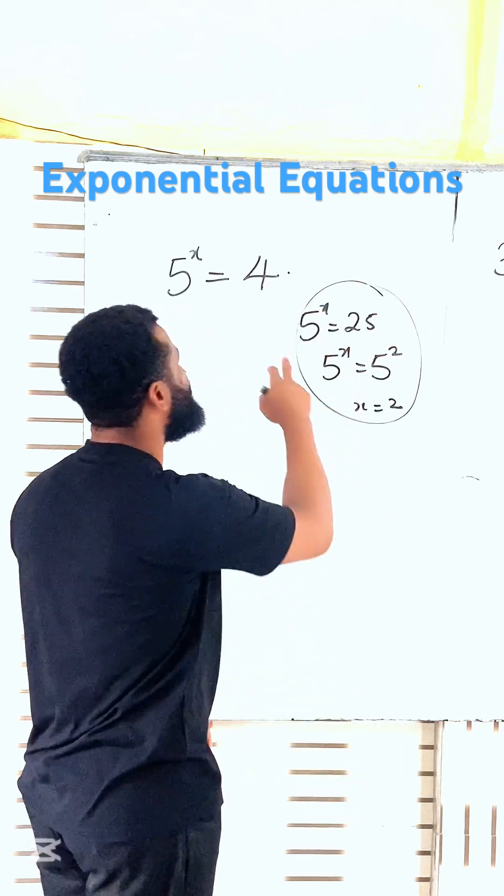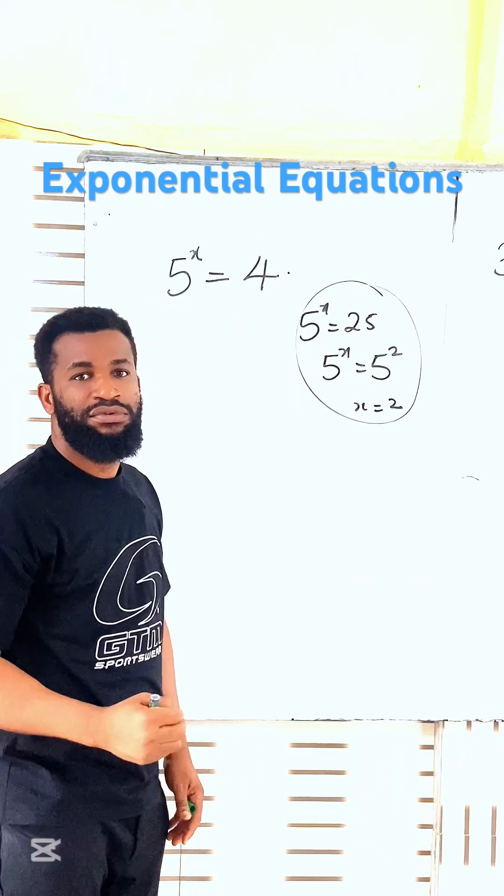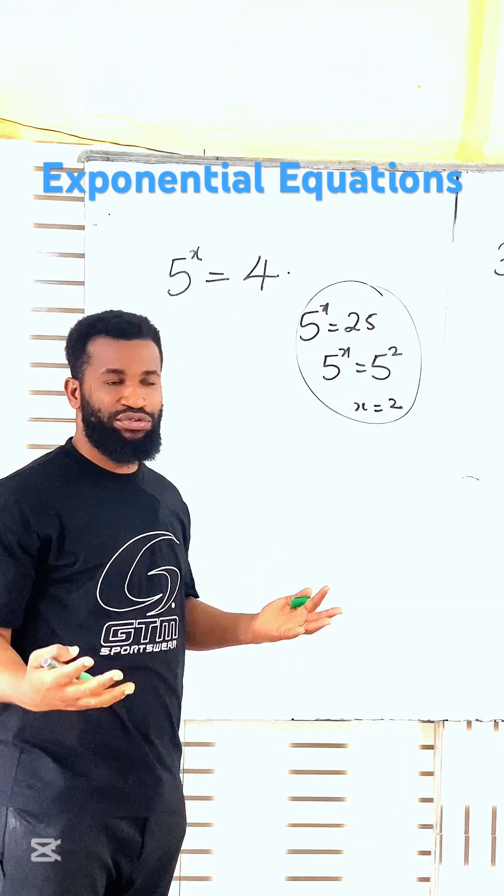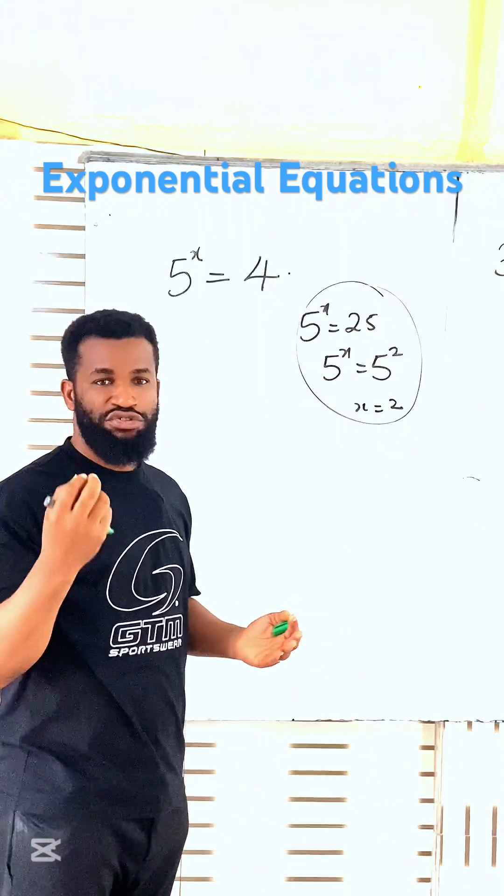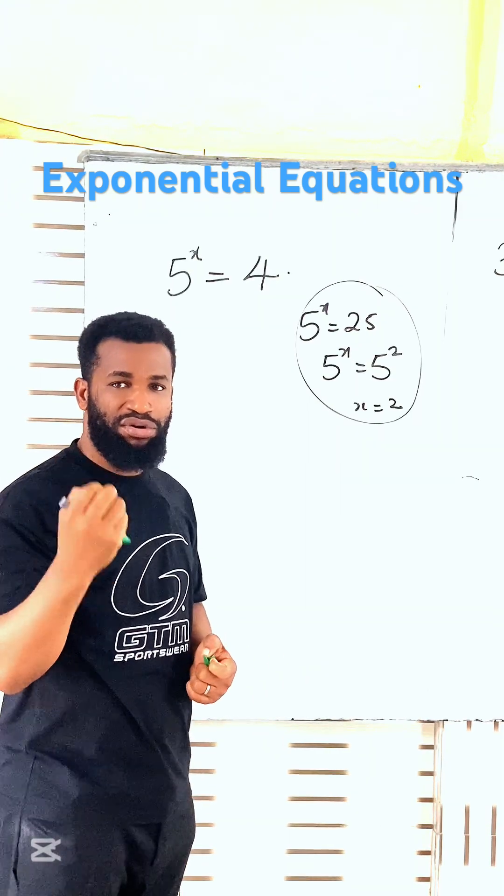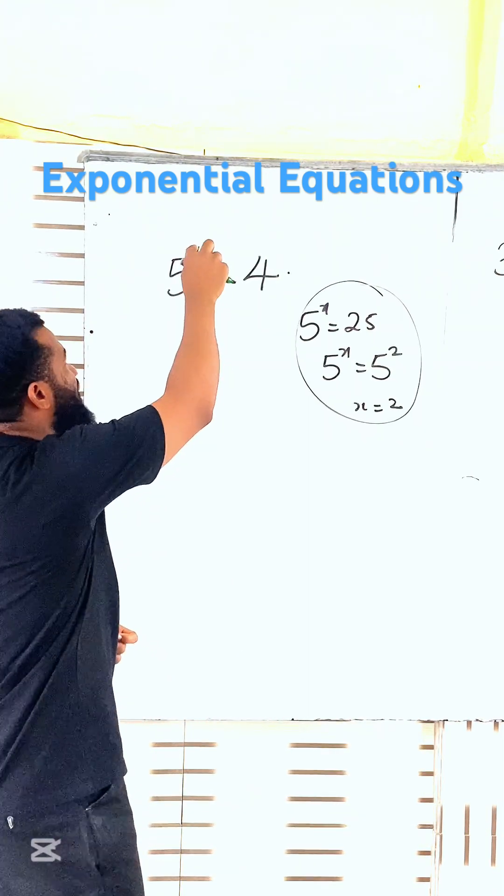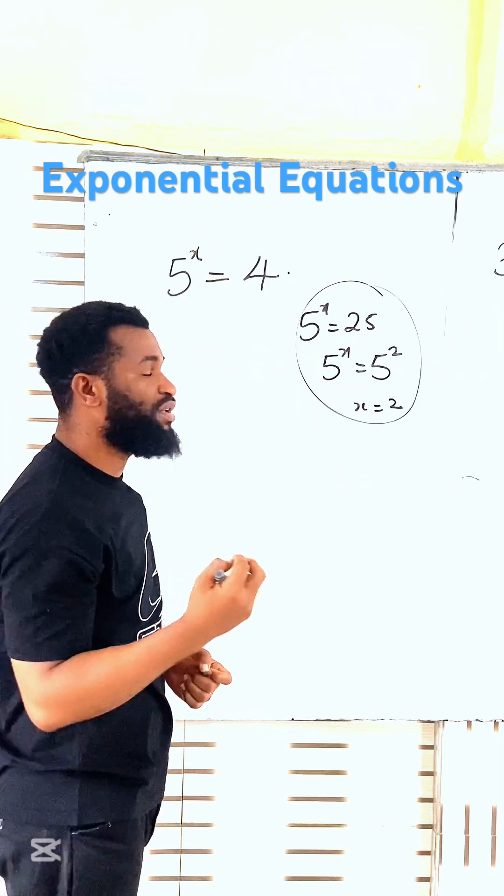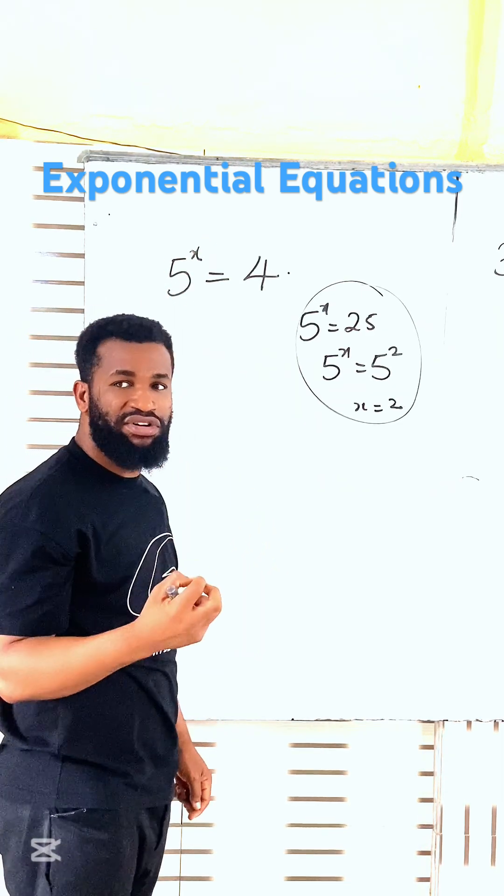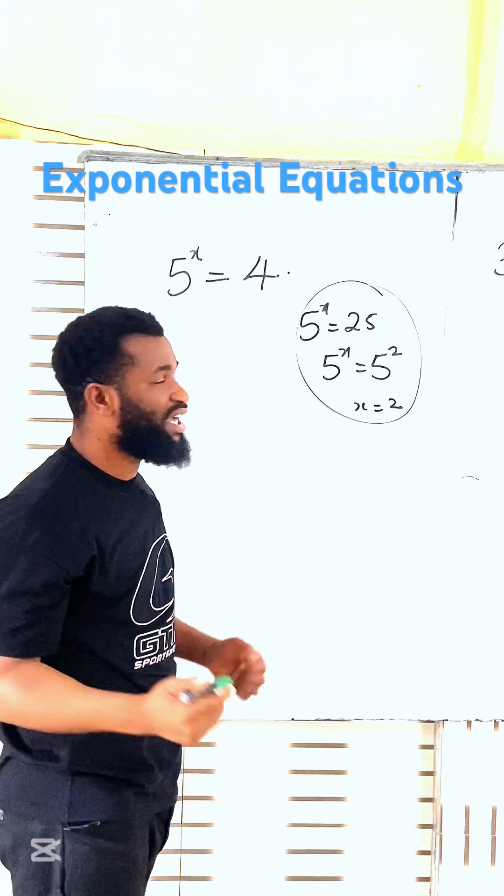But I can't do that to 4, so what are we going to do to simplify it? Next, you employ what you call the logarithm, because what will make this x to come down is when I use logarithm. So what am I going to say? I'm going to take logarithm of base 10 to both sides.